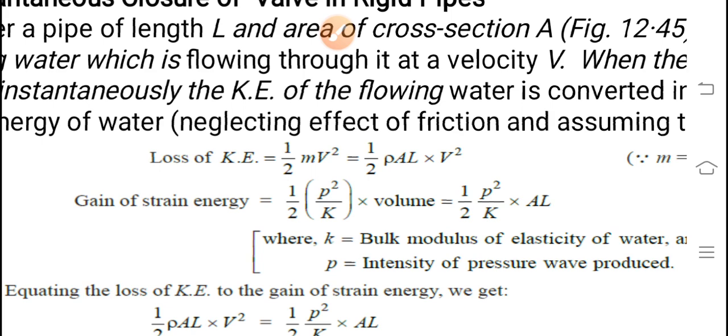Loss in kinetic energy of the flowing water is equal to half of p squared divided by k multiplied by volume, half of p squared by k multiplied by AL, where p is intensity of pressure wave produced, k is bulk modulus of elasticity of water.